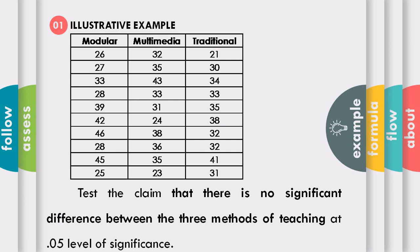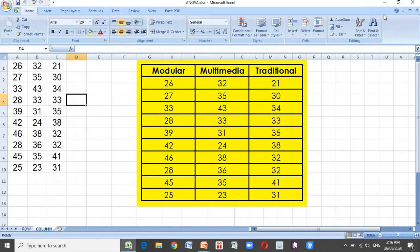Since the statement is stated as equal, this is already the null hypothesis. Our claim — the null hypothesis — is that there is no significant difference, and the alternative hypothesis is that there is a significant difference. We will now proceed to the computation.